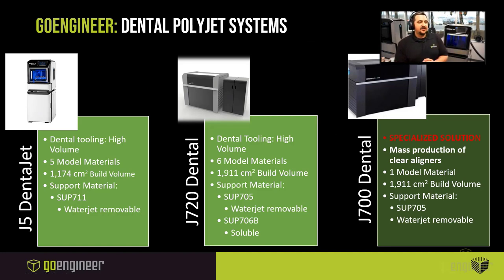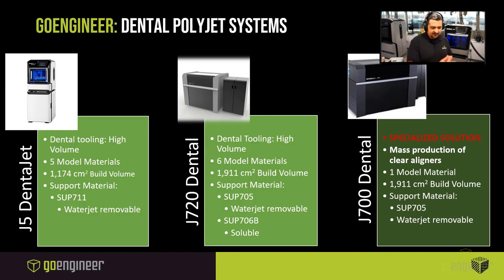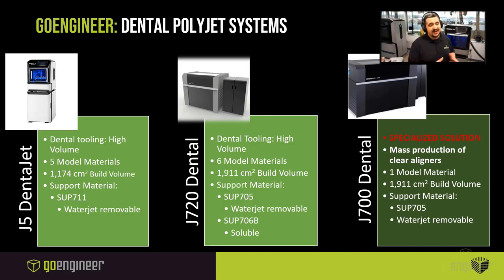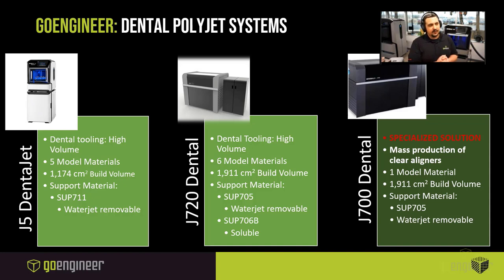There are three dental-specific PolyJet printers. The J5 DentaJet, built on the J55 platform but tailored in materials and software for dentistry, is high-volume and very fast. It supports five model materials simultaneously loaded in material bays, has a large build volume of 1,174 cubic centimeters enabled by its polar axis, and uses SUP11 support material removed by water jet.